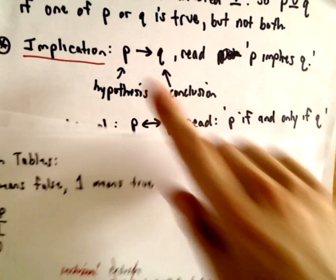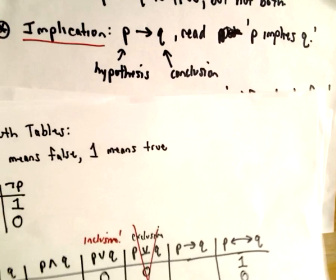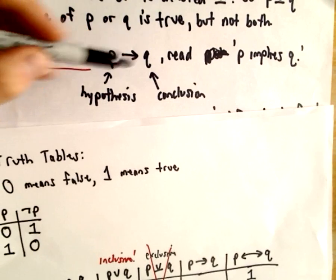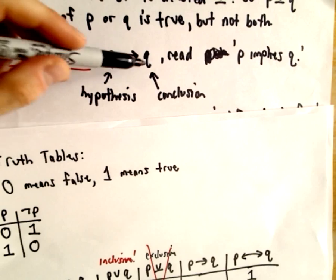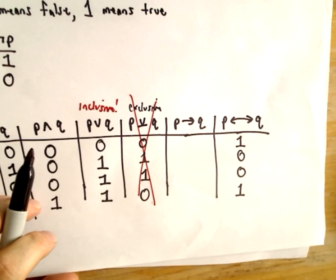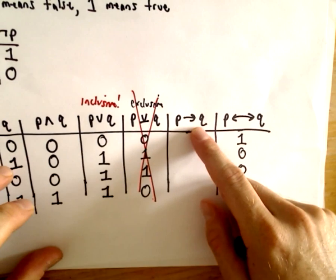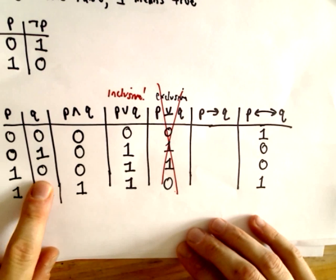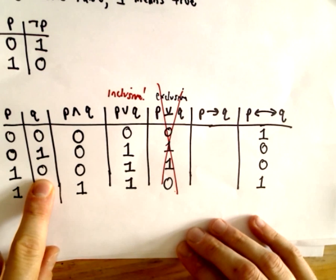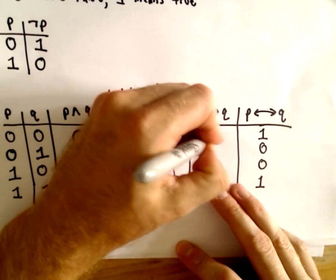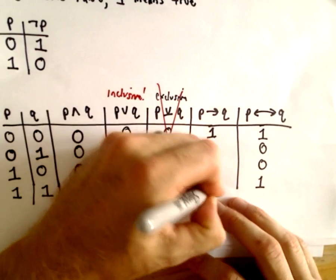Now let's talk about implication. We read this as 'p implies q.' p is known as the hypothesis and q is the conclusion. This one may seem counterintuitive: the only time p implies q is false is when p is true but q is false. That's the only time it's false - otherwise it's true.